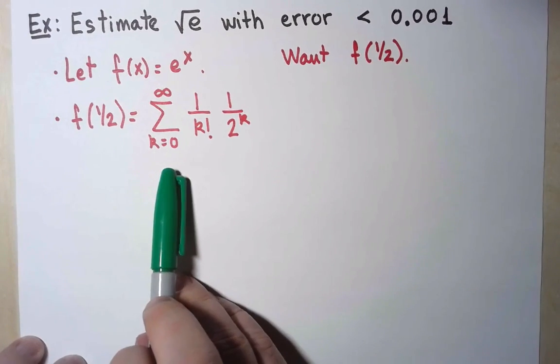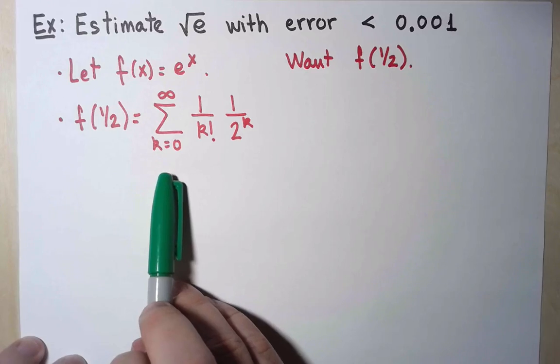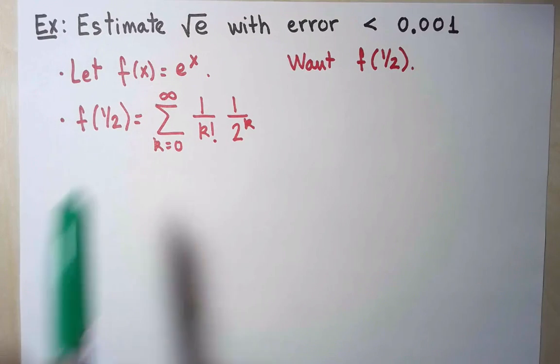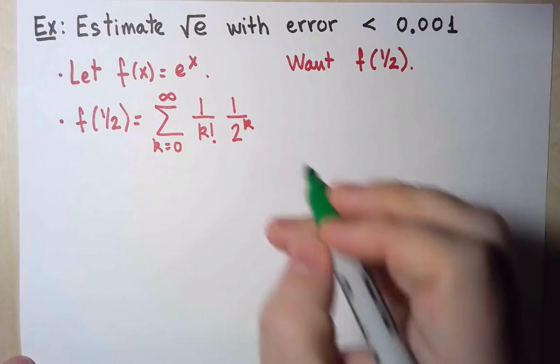Now this is an exact value, but it's an infinite sum. The way I estimate an infinite sum is to truncate it, to approximate it with a partial sum.